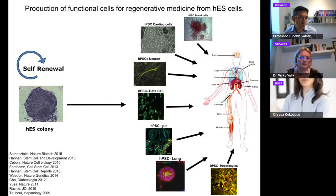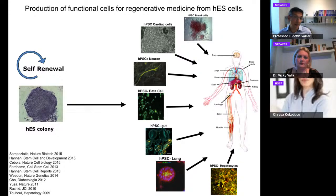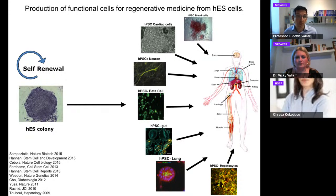Human embryonic stem cells form colonies of around 2,000 cells. They can self-renew — we can grow them for almost 100 passages in a petri dish — and they maintain their unique property of differentiation, being able to differentiate into almost any cell type of the adult body. In our lab we have done blood, cardiac, neurons, beta cells, gut, lung, and of course liver. The combination of infinite proliferation and capacity for differentiation makes these cells uniquely interesting for clinical application.